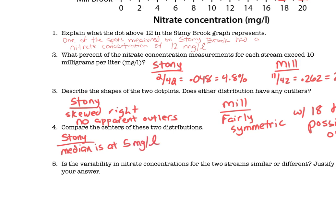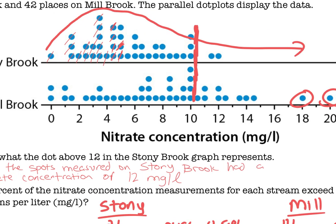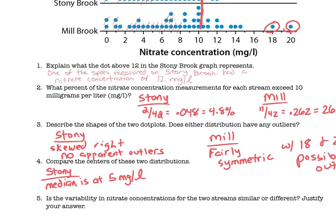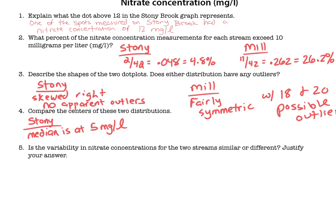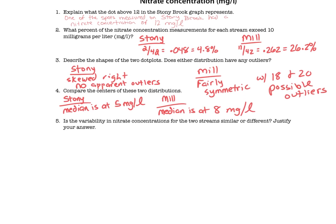Then I need to do the same thing for Mill. I need to figure out where that 21st dot is. Counting through the Mill Brook data, it looks like the median for Mill is at eight milligrams per liter. To find the median, find the middle dot, and wherever that middle dot is, that's the value of your median.